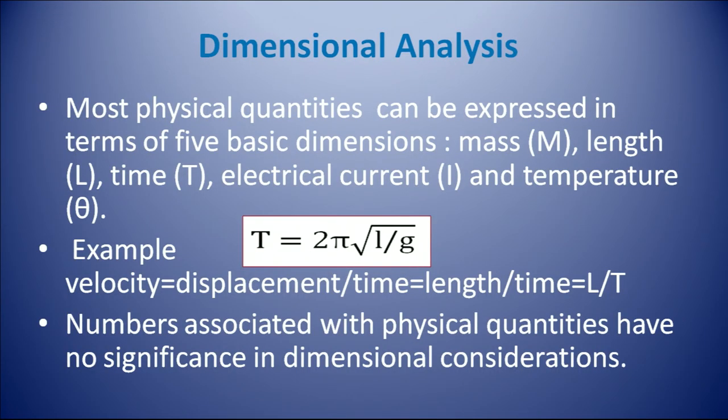So what is dimensional analysis? Most physical quantities can be expressed in terms of five basic dimensions: mass, length, time, electric current and temperature. These are the five basic fundamental quantities which we have read in the SI system of units. For example, we will express the expression for time period.